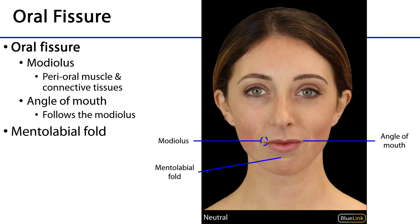Regarding the oral fissure: the oral fissure is the opening between the two lips. It's good to know that the lateral-most aspects of the oral fissure are the angles of the mouth. You can tell if someone is happy or sad based on which direction that angle is going, in part.